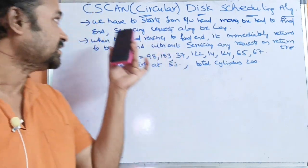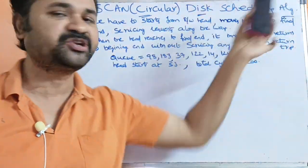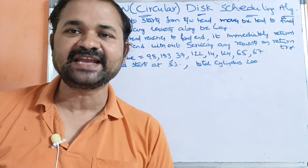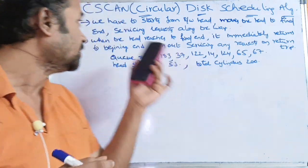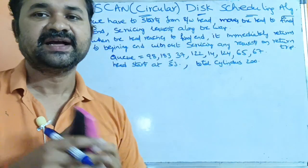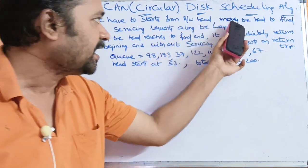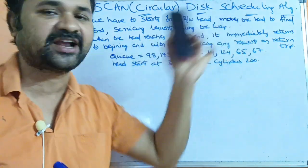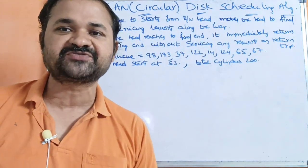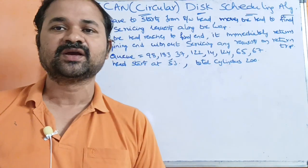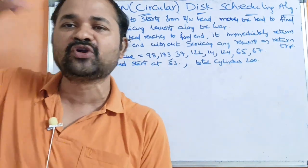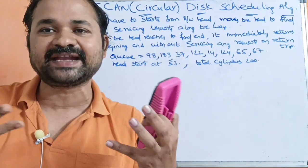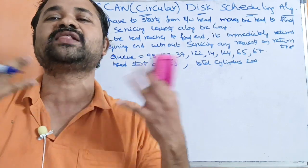Let us discuss the C-SCAN disk scheduling algorithm. C stands for circular, so this is the circular scan disk scheduling algorithm. Here, we start from the read-write head and move the head to the final end, servicing requests along the way. We will get several requests in the meantime, and we have to service all of them.